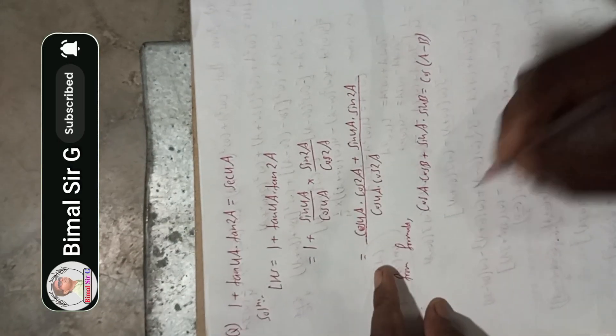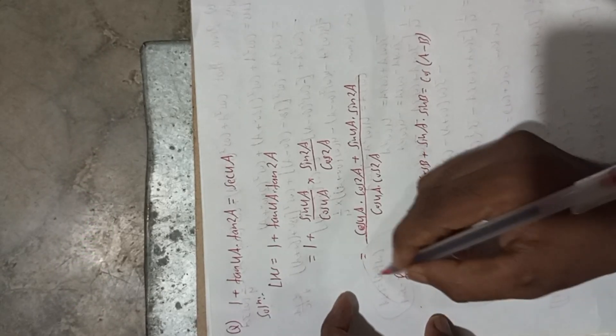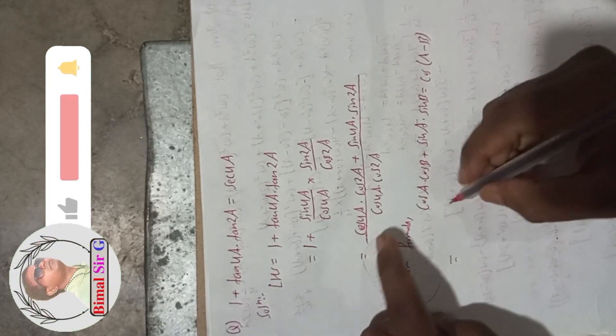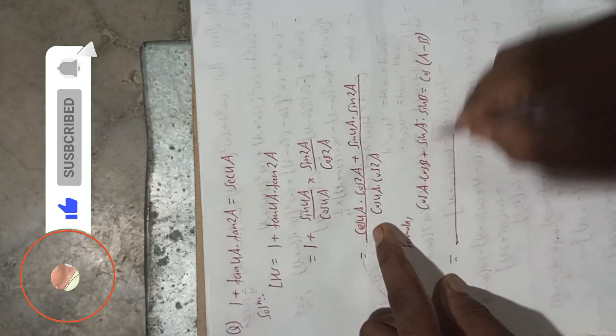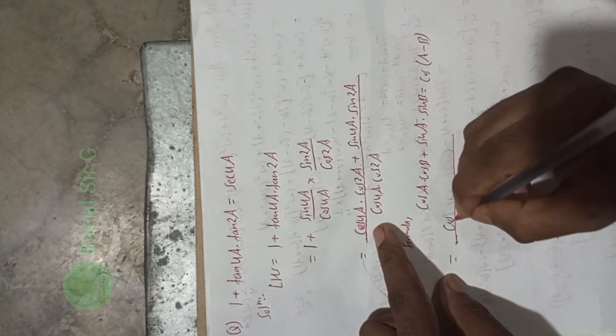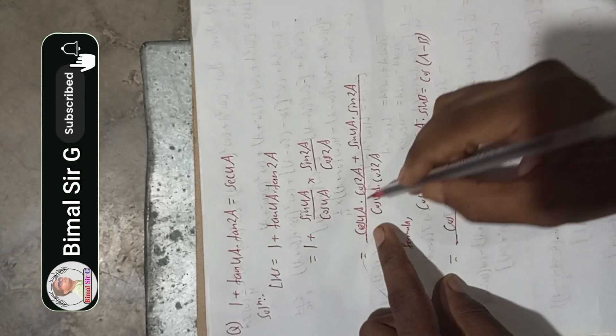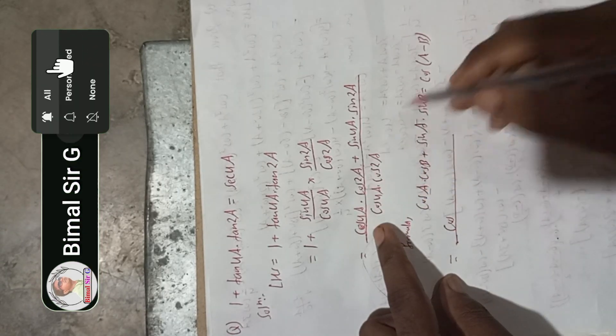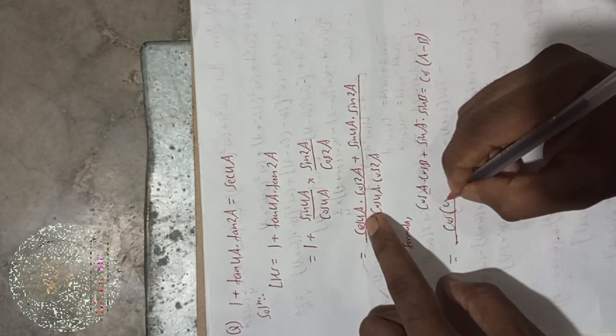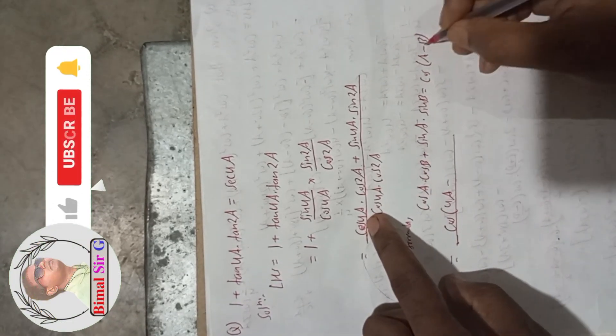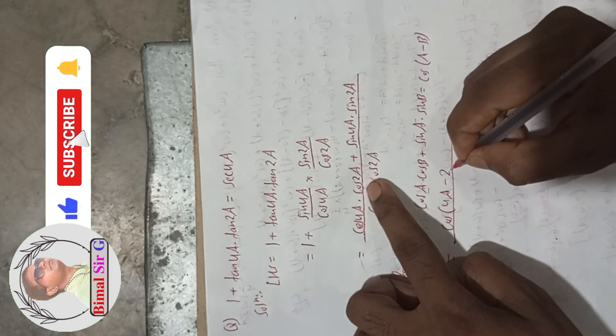So here we can write from the formula: this is cos, so in place of a there is 4a, and in b there is 2a. This will be cos(4a - 2a), with denominator cos(4a) × cos(2a).